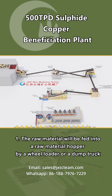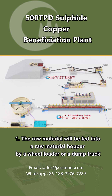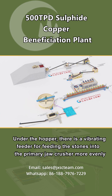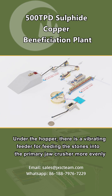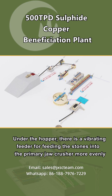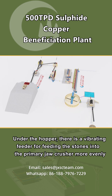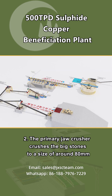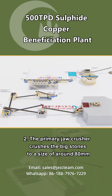The raw material will be fed into a raw material hopper by a wheel loader or a dump truck. Under the hopper, there is a vibrating feeder for feeding the stones into the primary jaw crusher more evenly. The primary jaw crusher crushes the big stones to a size of around 80 millimeters.